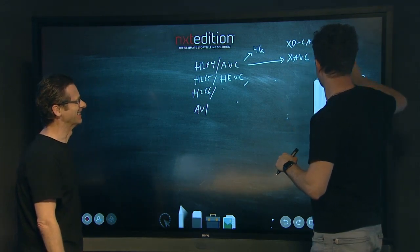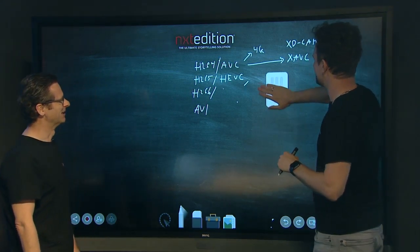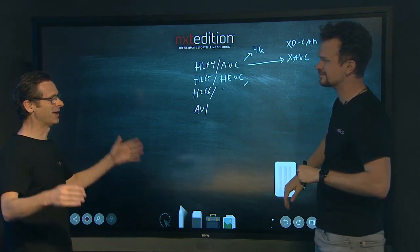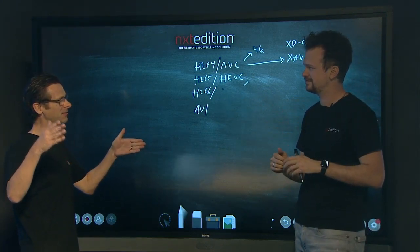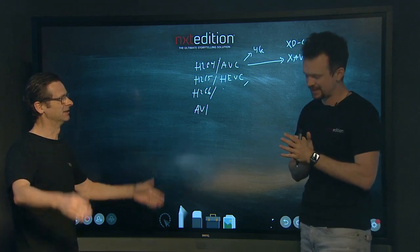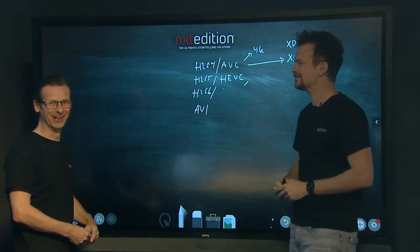Right. I thought it was something really technical, but group of pictures. Right. So long group of pictures is when you have a big distance between the I-frame and the next I-frame. Yeah. Right. Basically. Okay. Simplified that way. Awesome. I've learned something.